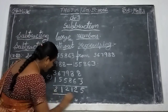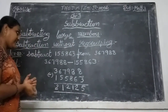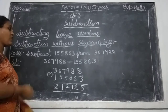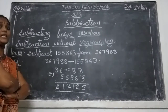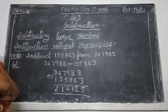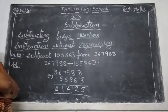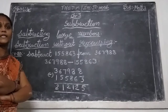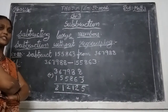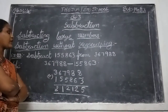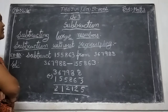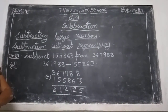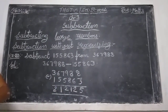This is also the without regrouping method with a 6-digit large number. Large numbers means 5 digits, 6 digits, continuously more digits. Up to 4 digits we call 1-digit, 2-digit, 3-digit, 4-digit. After that, we call them large numbers. This is a 6-digit number subtracted without regrouping.